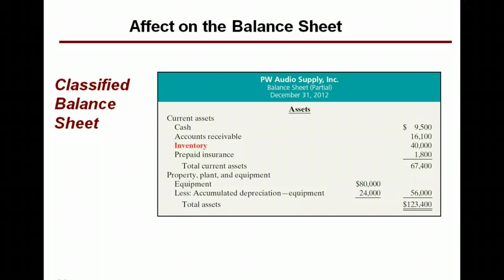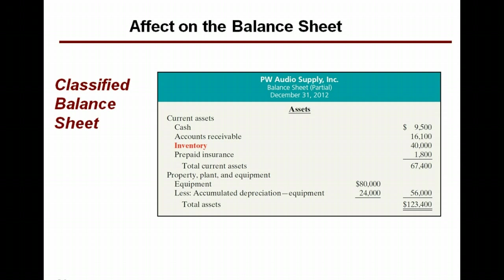That completes our look at how inventory affects the income statement. Let's look at how it affects the balance sheet. Inventory changes the balance sheet only in one way and only in one area: assets. Inventory is a current asset — in fact, it's part of the definition of a current asset. A current asset is one that will be used or consumed within a year or an operating cycle, whichever is longer, or converted to cash within that same period. You put money out to buy inventory, then you sell it, then you collect it — so inventory is part of the very definition of the operating cycle.